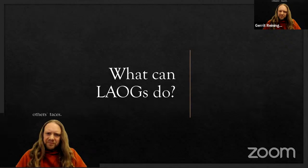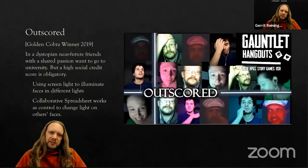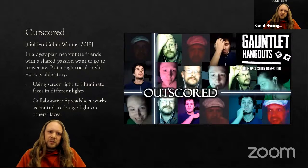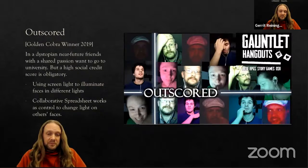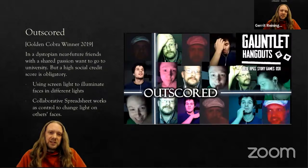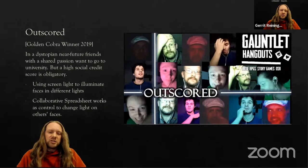So what can LARPs do? I'll bring a couple of examples. The first is called Outscored — a LOG I designed for the Golden Cobra in 2019, which won one of the Golden Cobra awards. The concept: there's a dystopian future where friends want to go to university and need a high social score. In this dystopian society, every individual has a score, and when you want to do something, they check it — if it's too low, you get rejected. Aim for a good score.